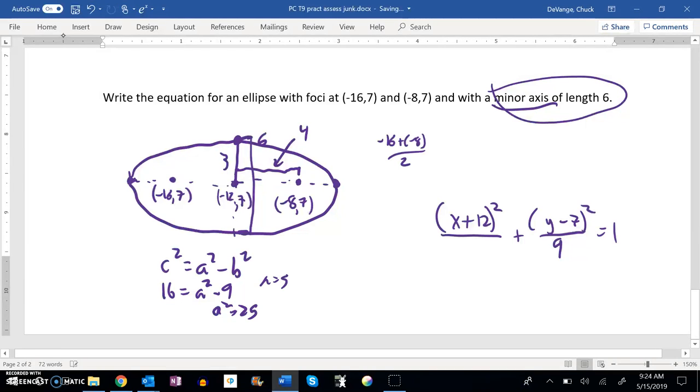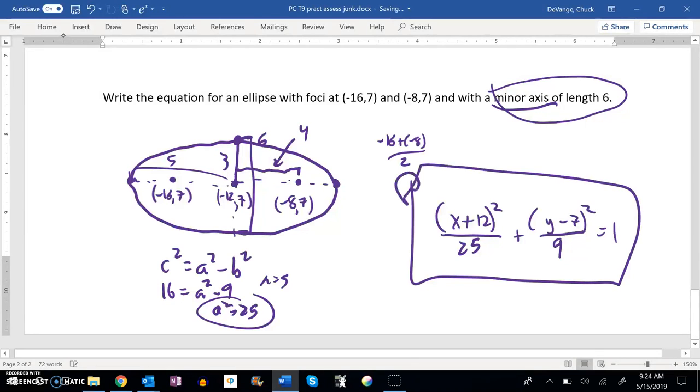Add 9 to both sides. It looks like a² is 25. So a is 5. So that distance there is 5. I don't really need it, but it's 5. But I know that this is a 25. And all I needed was the equation. Yeah, there it is.